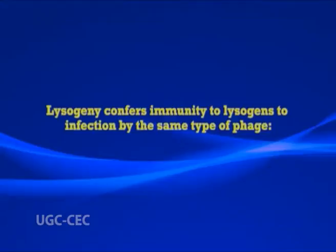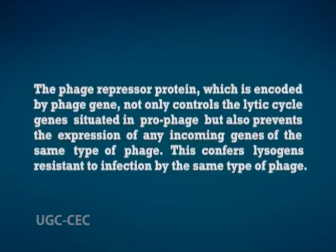Lysogeny confers immunity on the lysogen against infection by the same type of phage. The temperate bacteriophage does not exist freely in the bacterial host cytoplasm; instead, it remains integrated into the bacterial DNA and replicates along with it as long as its lytic cycle genes are not expressed. This state of lysogeny is maintained by the phage repressor protein, which not only controls the lytic cycle genes in the prophage but also prevents the expression of any incoming genes of the same type of phage, conferring resistance to infection by the same phage type.